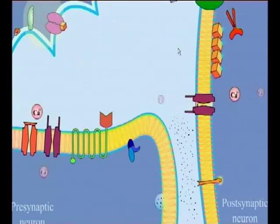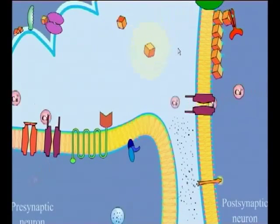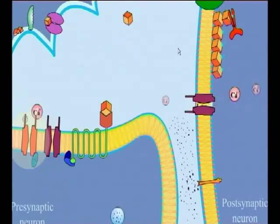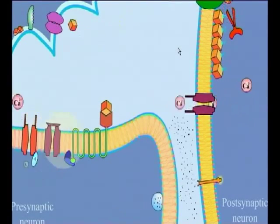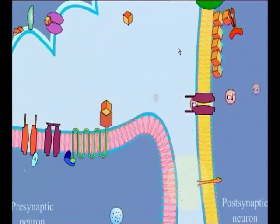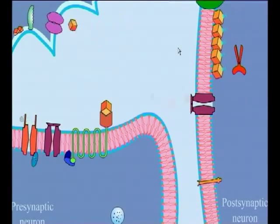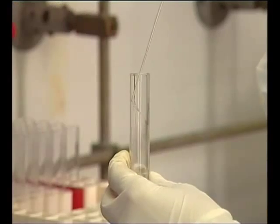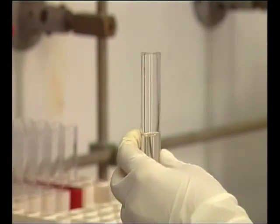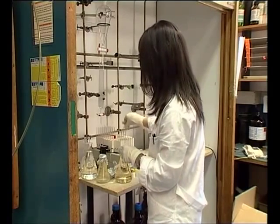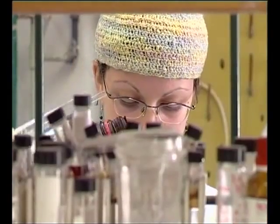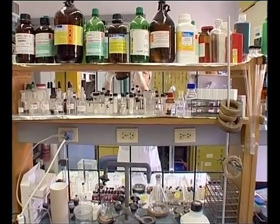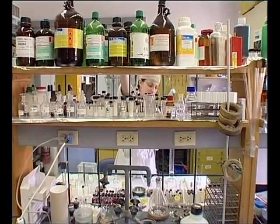But how come the brain has a receptor for a plant constituent? After all, our brain doesn't have a receptor for every plant constituent — actually, it doesn't have a receptor for any plant constituent. So we started working on the assumption that maybe there are compounds in the brain that act on this particular receptor, and THC in the plant actually mimics the action of the compounds in the brain.